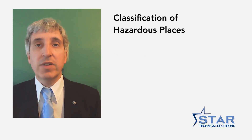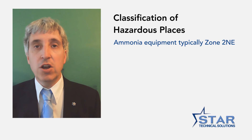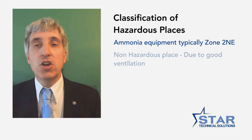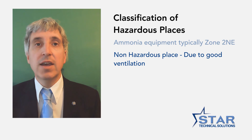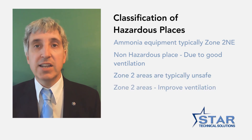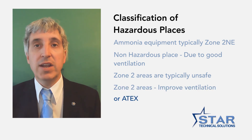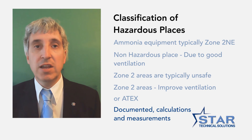When carrying out a classification of hazardous places, ammonia equipment locations are typically designated as Zone 2 and E non-hazardous areas due to having good ventilation. However, often during our inspections we identify areas as Zone 2 hazardous areas. These Zone 2 hazardous areas are deemed as unsafe and typically require the ventilation to be locally improved. Normally, places classified as Zone 2 should have ATEX equipment, which is very expensive. When carrying out a classification of hazardous places, the classification method must be documented, which includes the calculations and measurements.